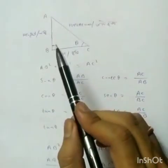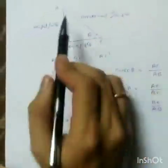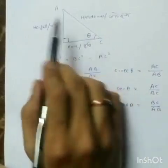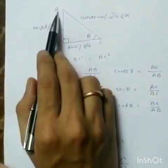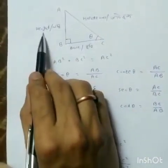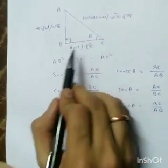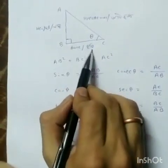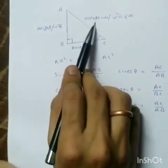Let us look at a right-angle triangle. Triangle ABC has a right angle. AB is the height, BC is the base, and AC is the hypotenuse.